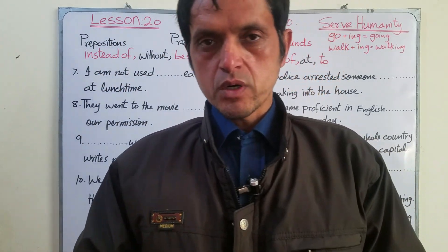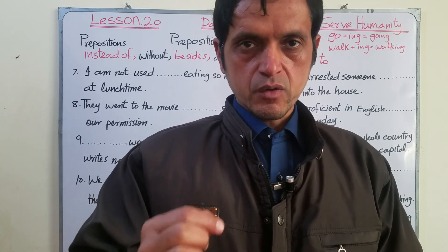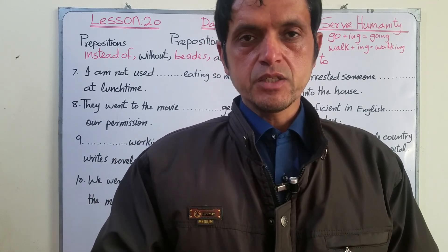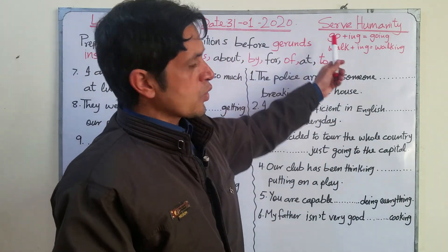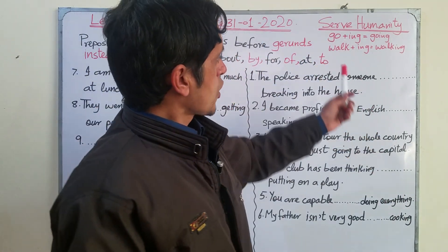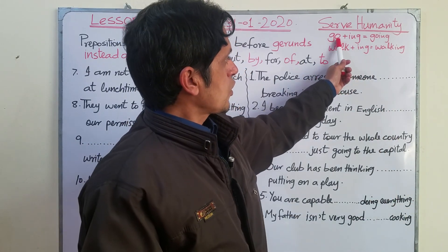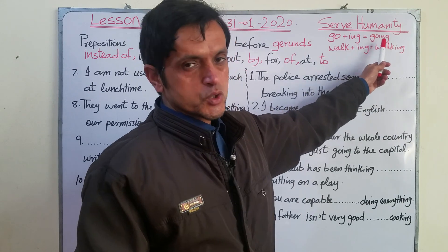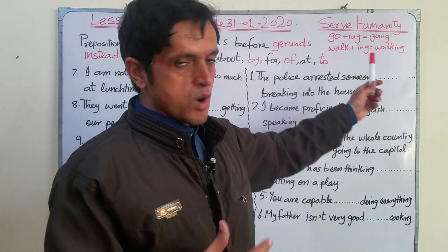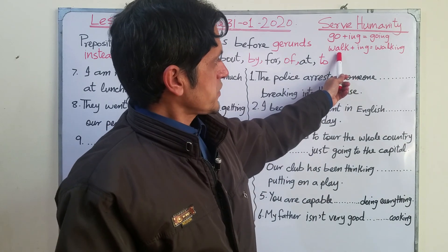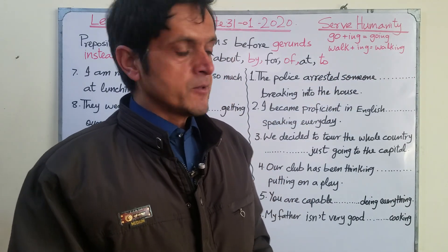In simple words, the first form of the verb plus -ing is called a gerund. For example: go, went, gone — so 'go' is the first form, and go plus -ing gives us 'going,' which is a gerund. Similarly, walk, walked, walked — 'walk' is the first form, and walk plus -ing gives us 'walking,' which is also a gerund.